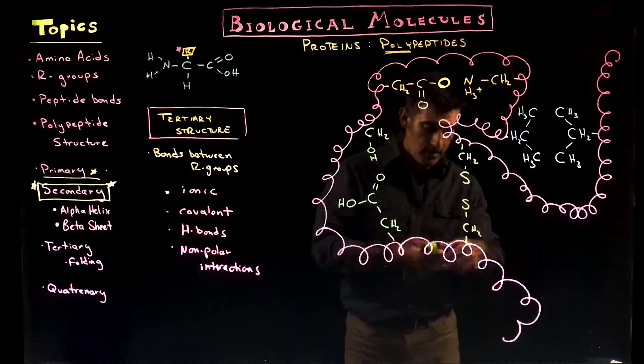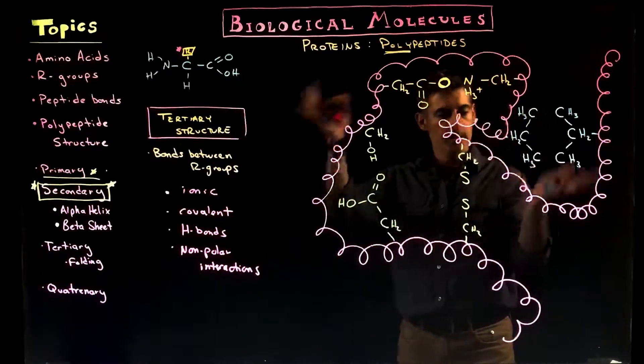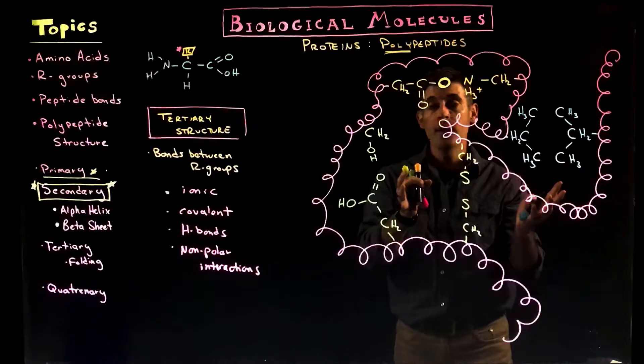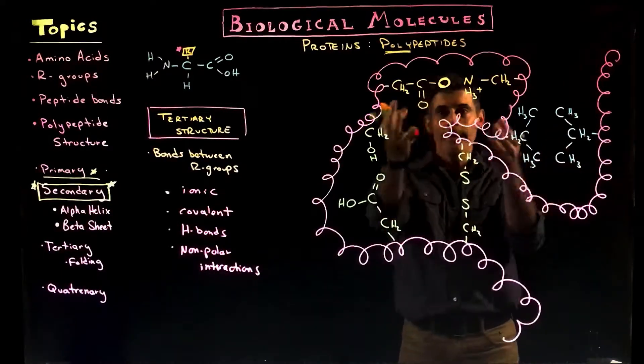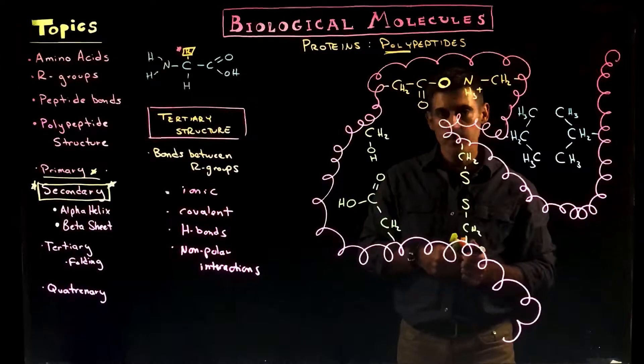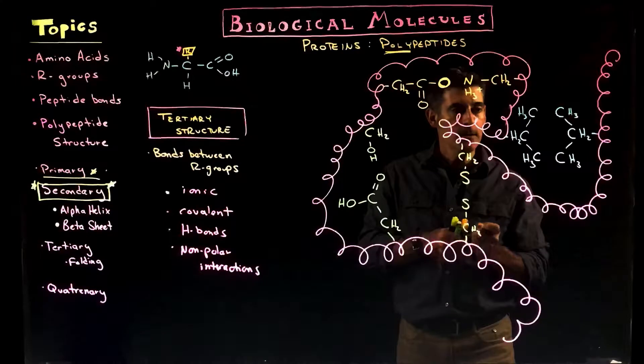So here we have, over here, let's look at this. The little squiggly thing is representing a twisted, folded alpha helical part of a protein that now has just some highlighted R groups sticking off it where we can see how they might interact with each other. And these are just some examples. They're not the only kinds that can occur.